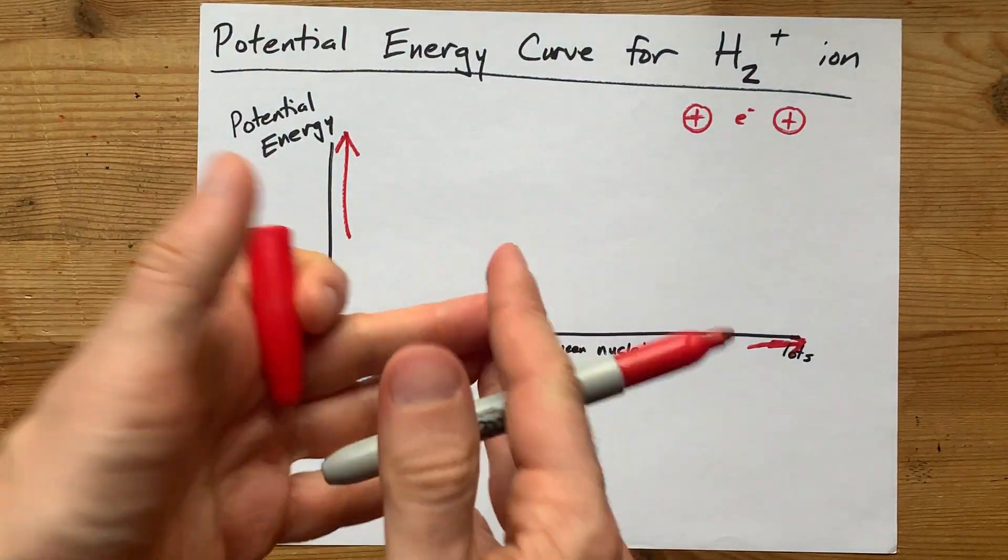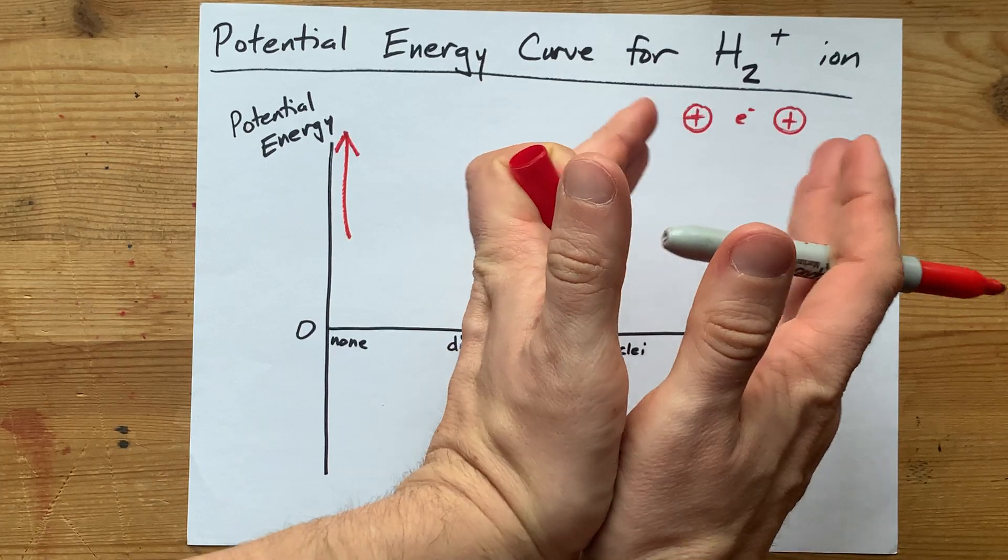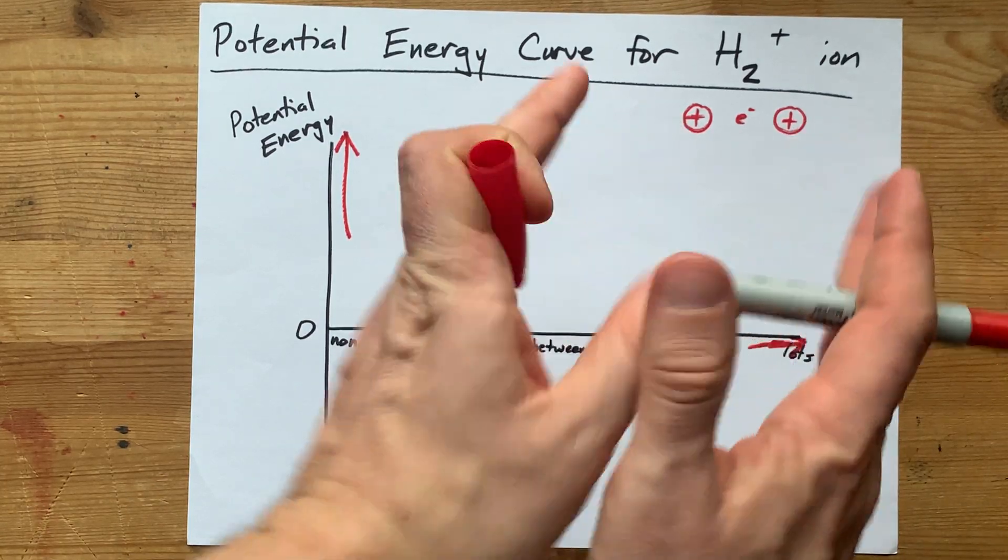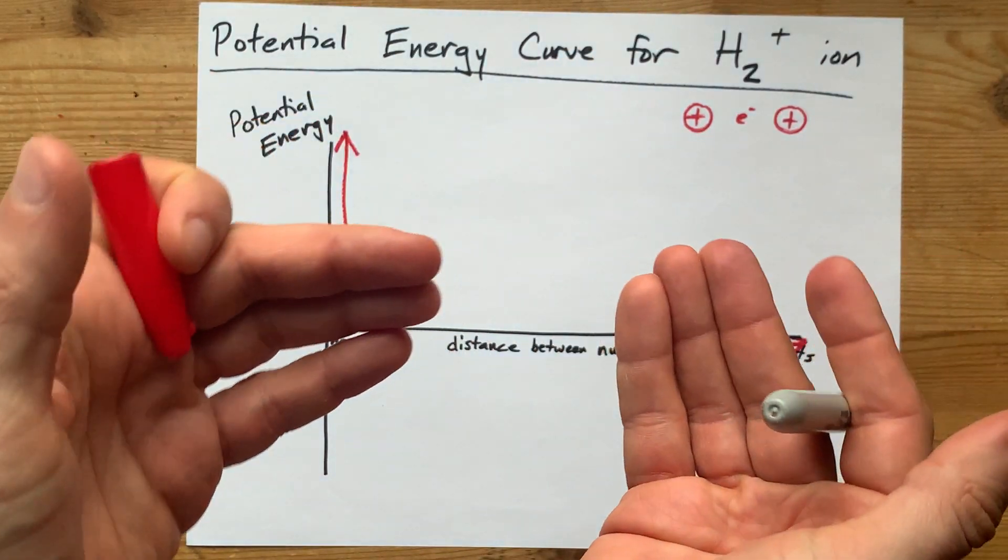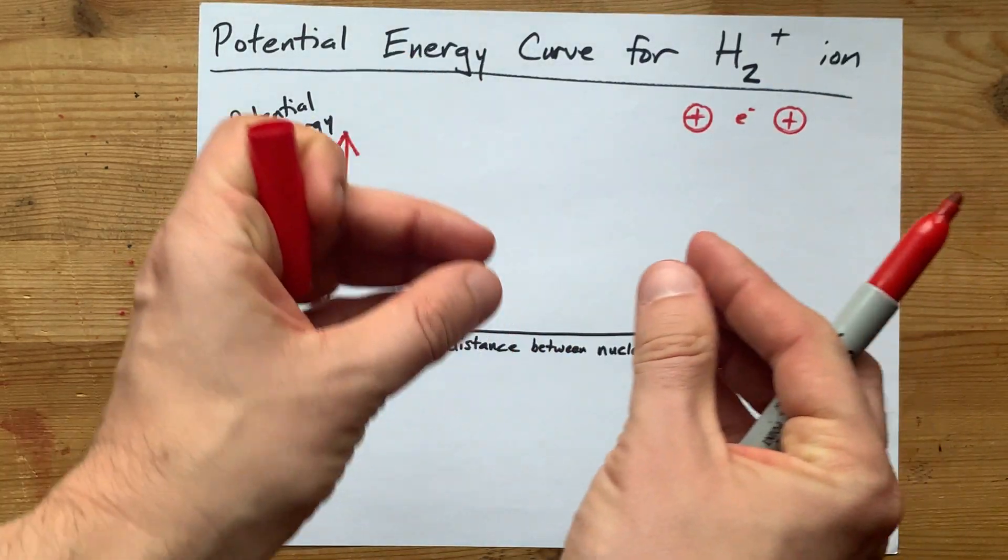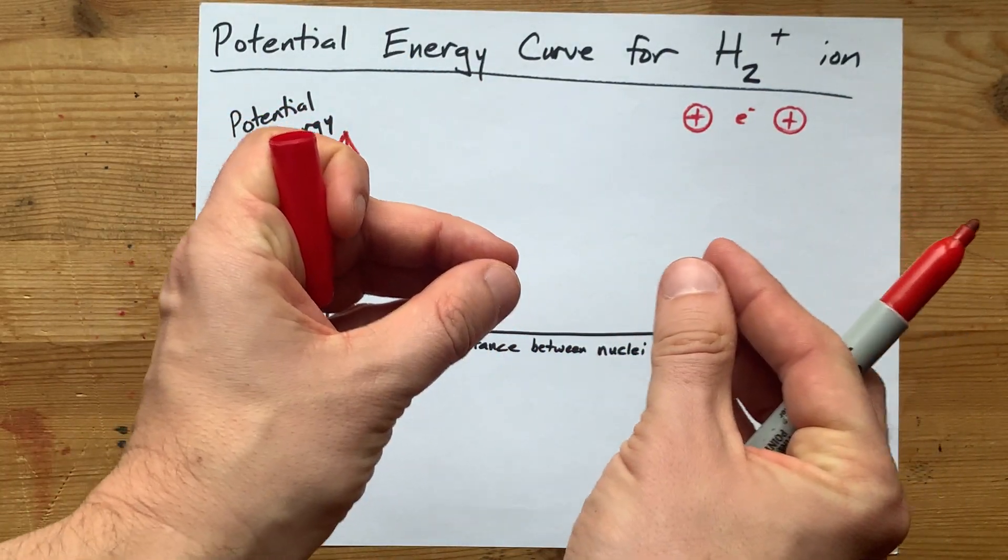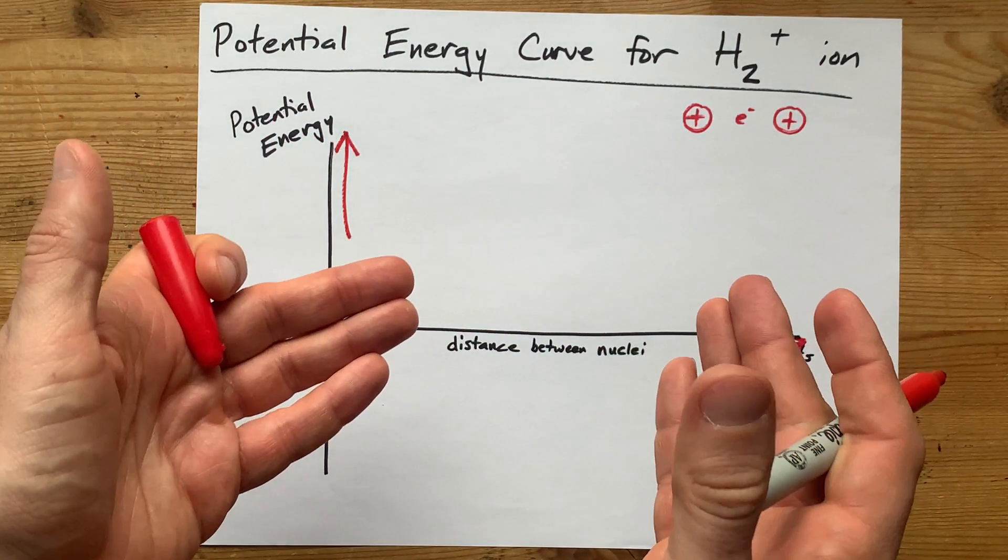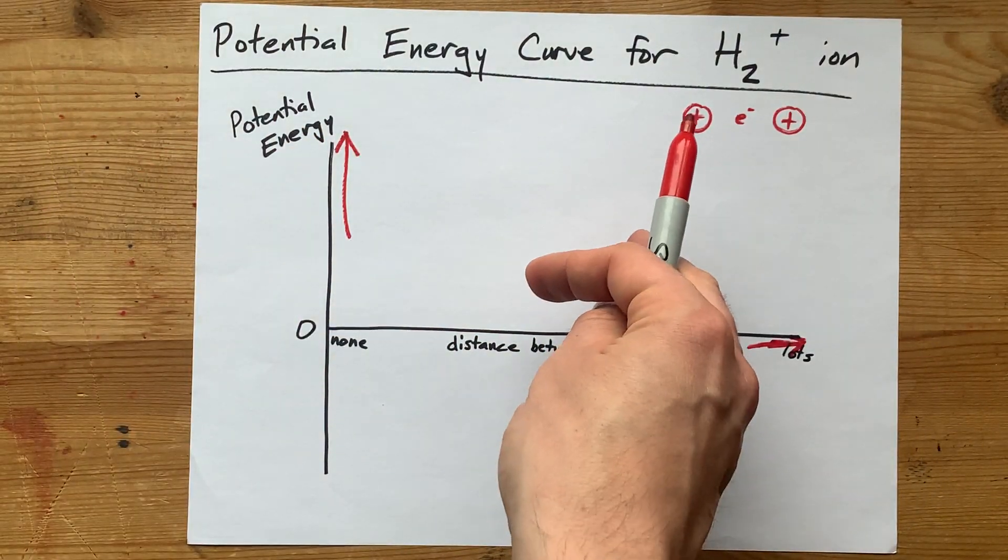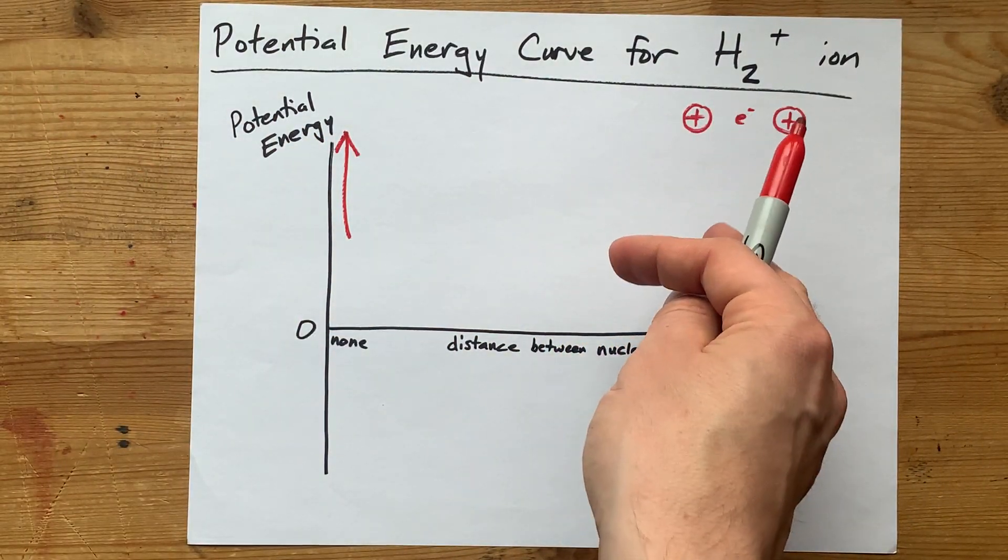Is there a magical distance between which these pluses don't repel each other so much that the electron is actually able to simultaneously attract both of them? Yes. And because the positive sees the negative, and that positive sees the negative,